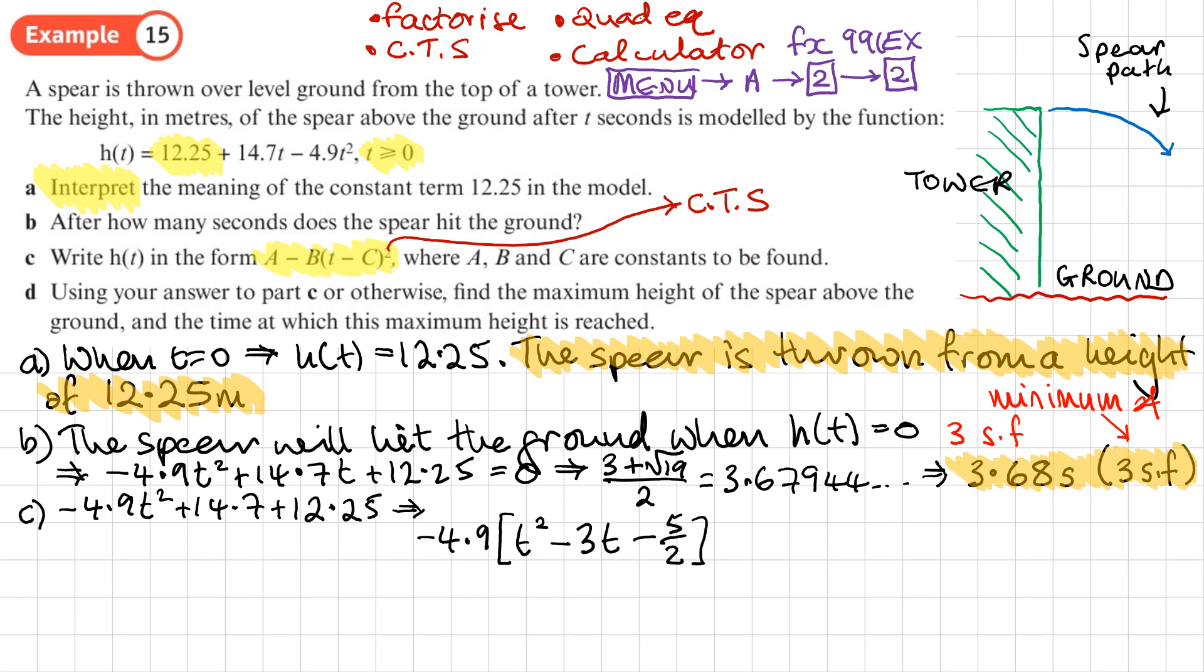So now this is in a format where we can complete the square. -4.9, and then in brackets we'll have t minus half of the 3, which is 3/2 - keep it as a fraction - (t - 3/2)². Now what will this generate? What number will it generate that we don't want? -(3/2)². I don't want -(3/2)², so I'll take that off, that's the same as 9/4. But I do want -5/2. So remember, take off what you don't want, which is this, and then put in what you do want, which is -5/2.